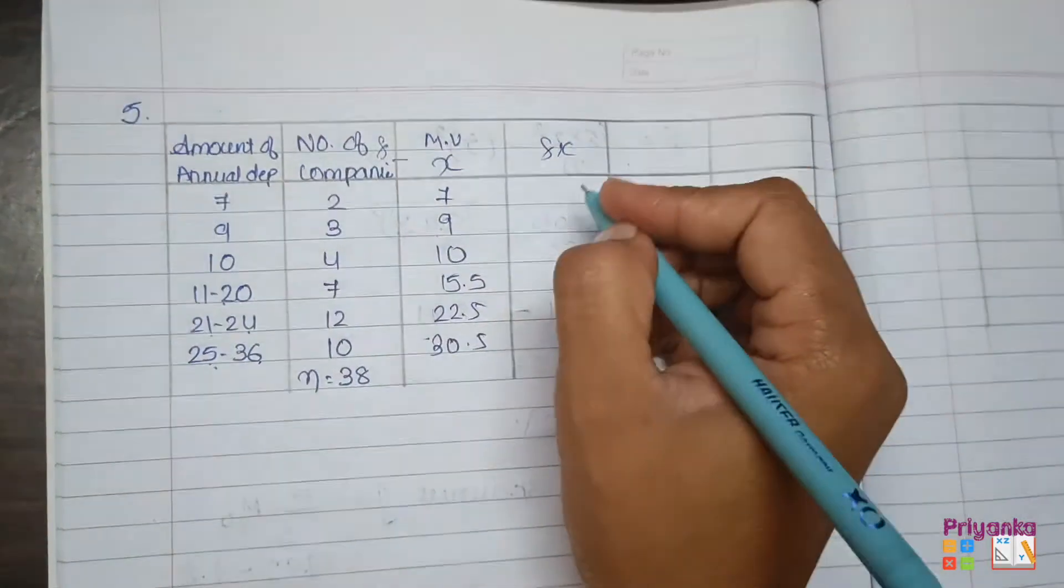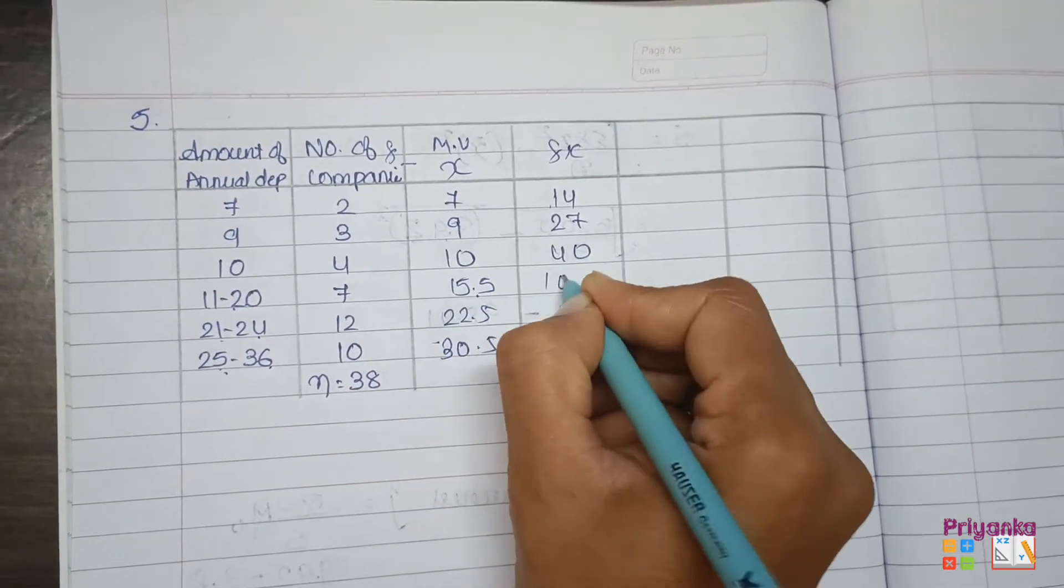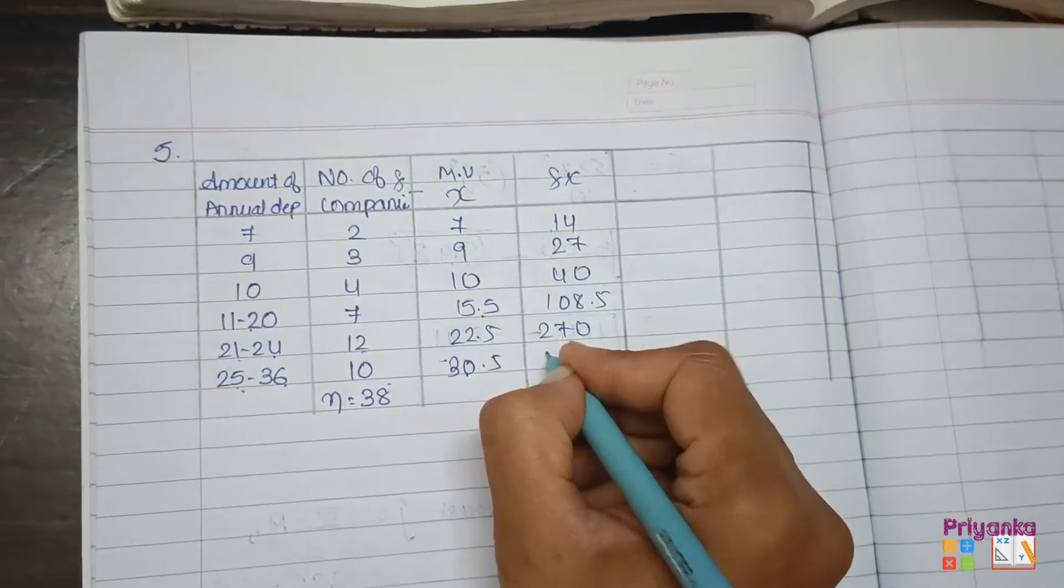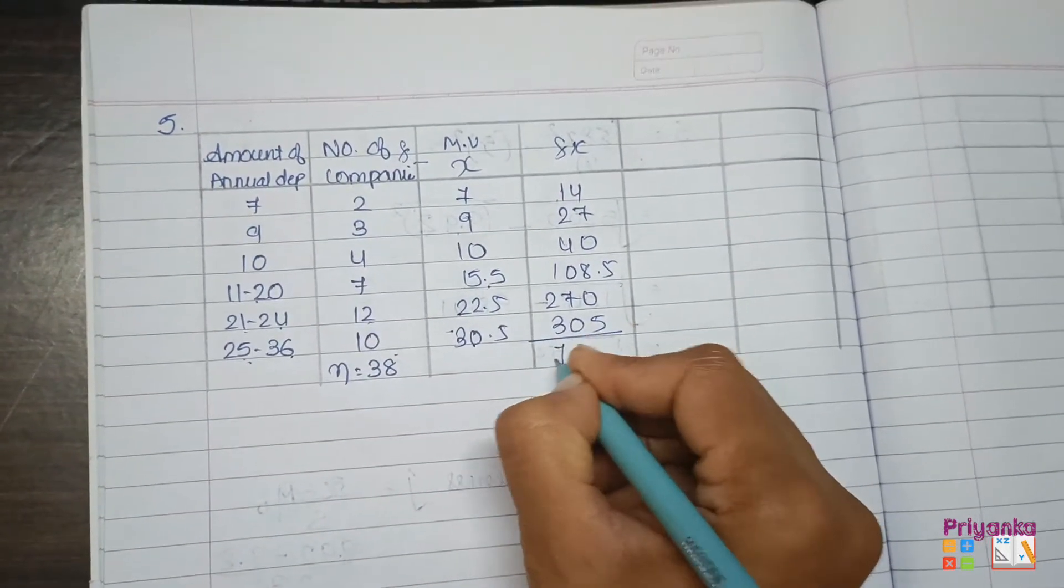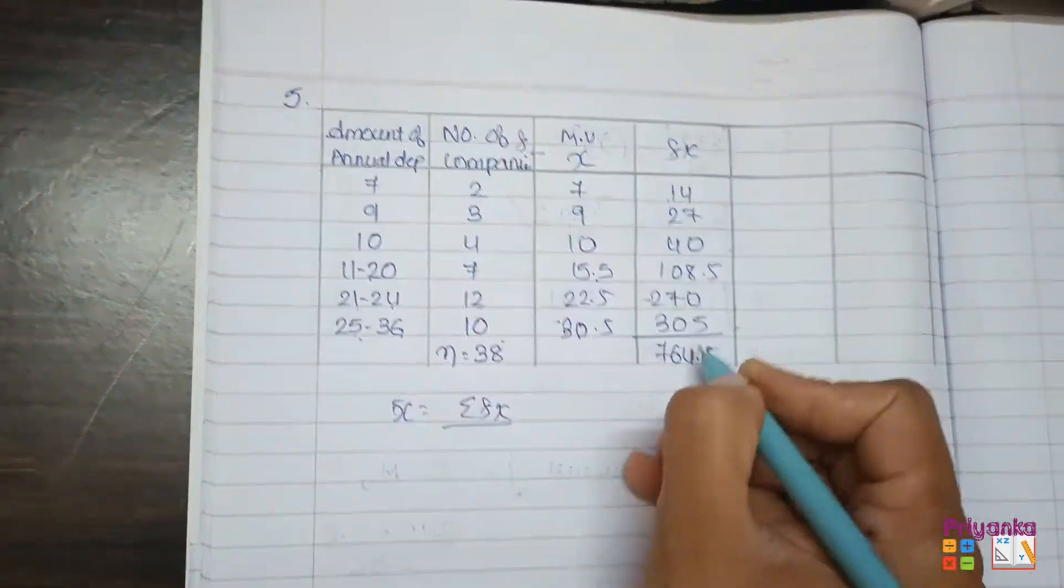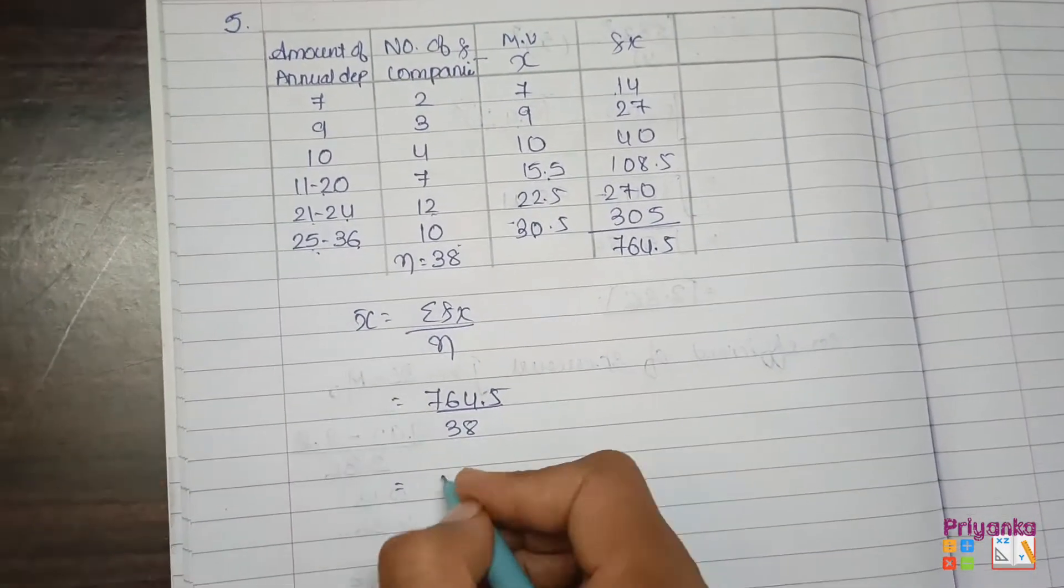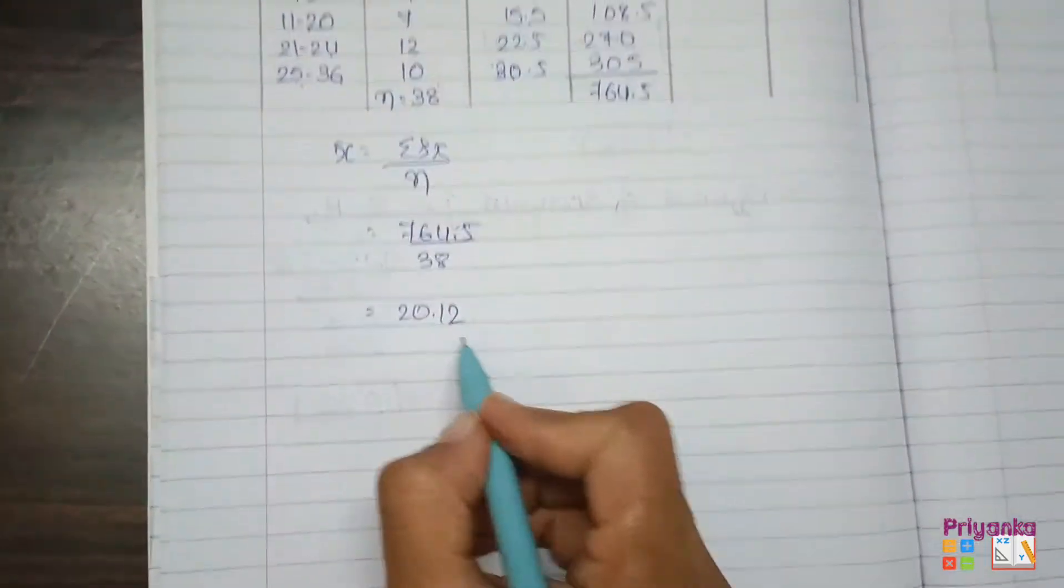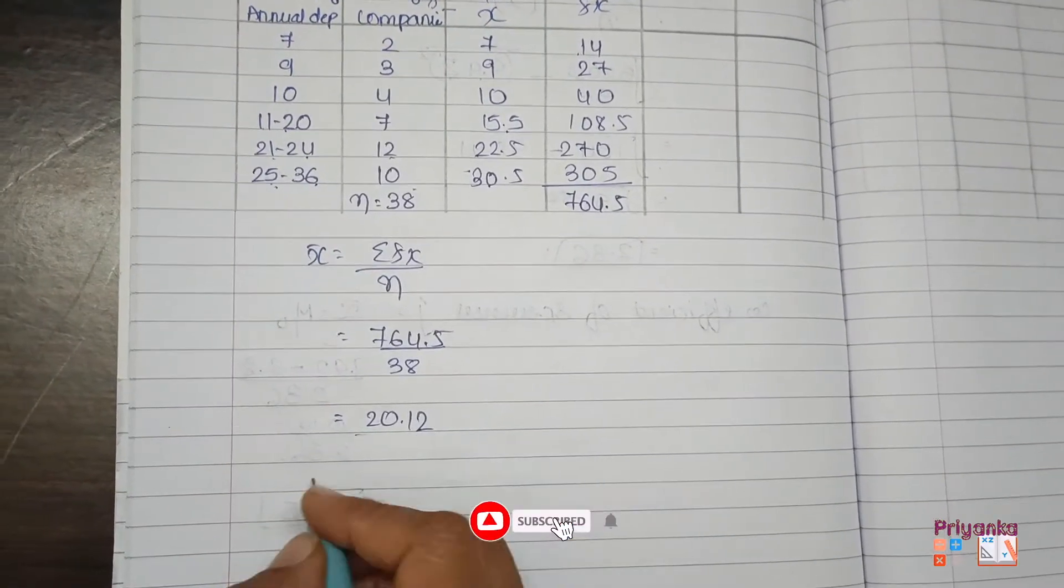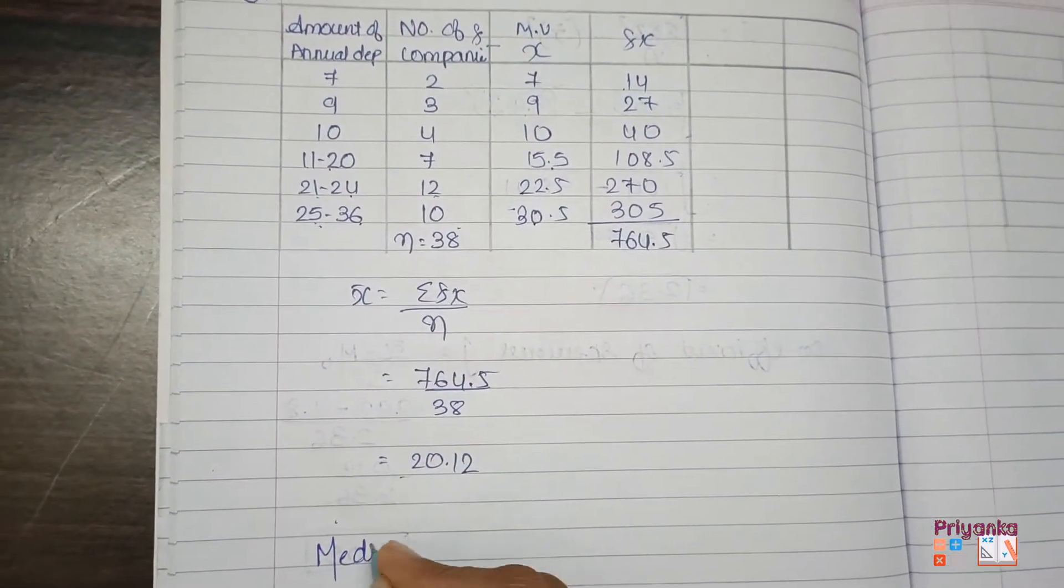After finding mid value, next is fx - frequency multiplied by x: 2×7=14, 3×9=27, 4×10=40, 7×15.5=108.5, 12×22.5=270, 10×30.5=305. Total is 764.5. First we find mean: sigma fx divided by n equals 764.5 divided by 38 equals 20.12.